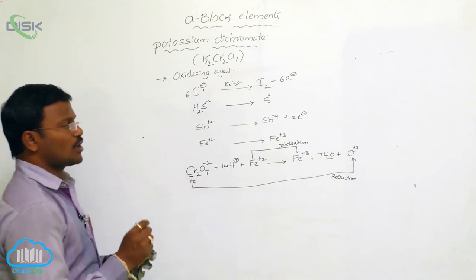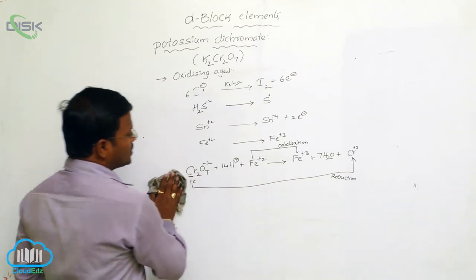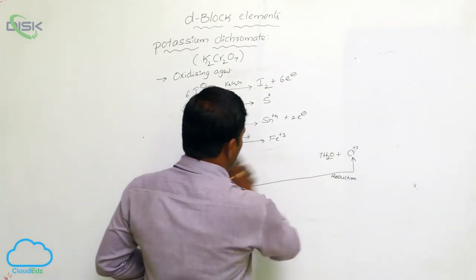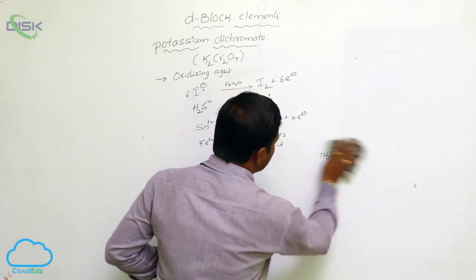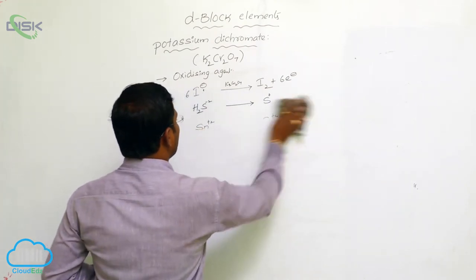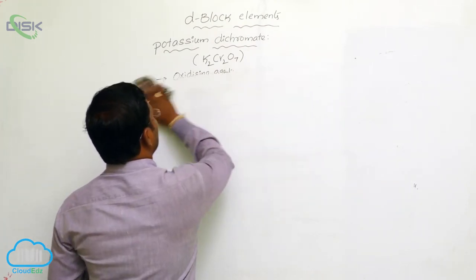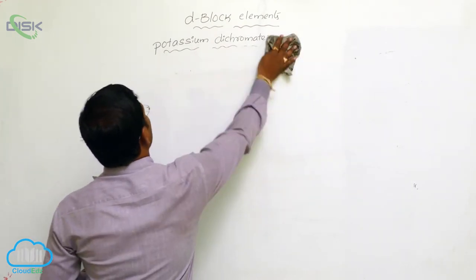This completes the discussion of potassium dichromate. Next, we look at one more chemical substance — an oxide resulting from d-block elements, specifically from the transition metal manganese.